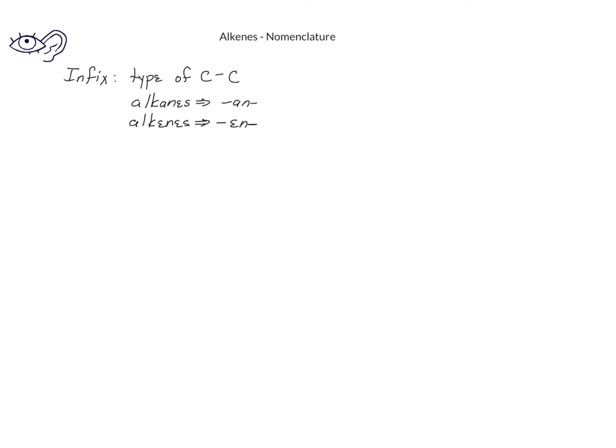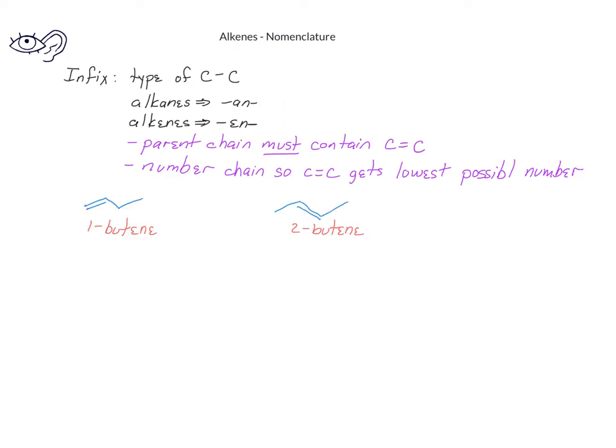Another key component of naming the alkenes is that the parent chain must contain the carbon-carbon double bond. In addition, we want to number the main parent chain so that the carbon-carbon double bond gets the lowest possible number. When we have alkenes that have both a double bond and a substituent, it's important that the carbon-carbon double bond gets numbering priority over the substituent.